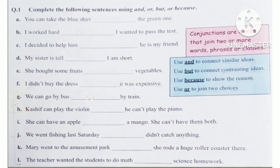Let's start the question. Question number 1 is: complete the following sentences using AND, OR, BUT, or BECAUSE. Part A is: you can take the blue shirt __ the green one. Here you can see there are two options or choices, so when we have options or choices, we use the conjunction OR. Answer: You can take the blue shirt or the green one.